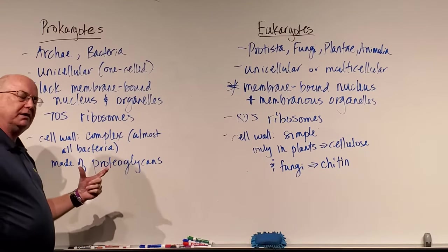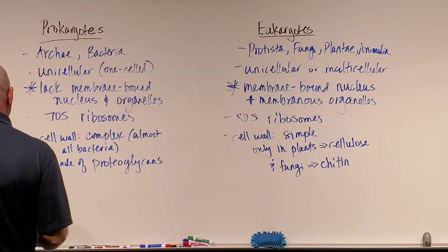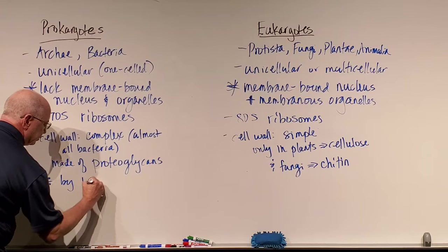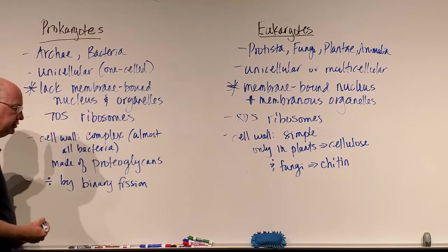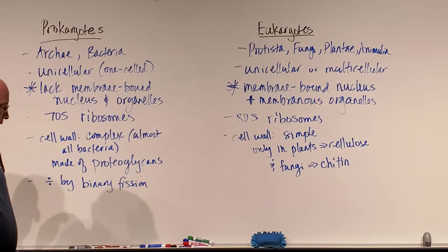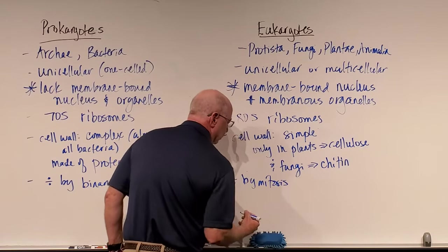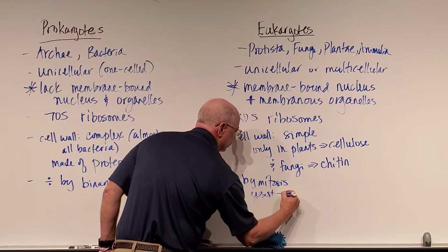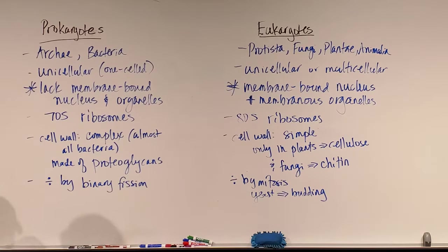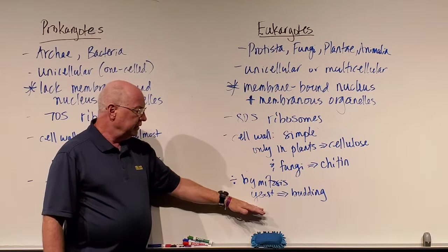Bacteria divide by a process called binary fission — they copy their chromosome and split in half. There are not a lot of steps involved like in mitosis. Eukaryotes divide by mitosis, or yeast can do a process called budding — they can literally pinch a section off and regrow it. So prokaryotes divide by binary fission; eukaryotes divide by mitosis, or by budding in the case of some yeast.